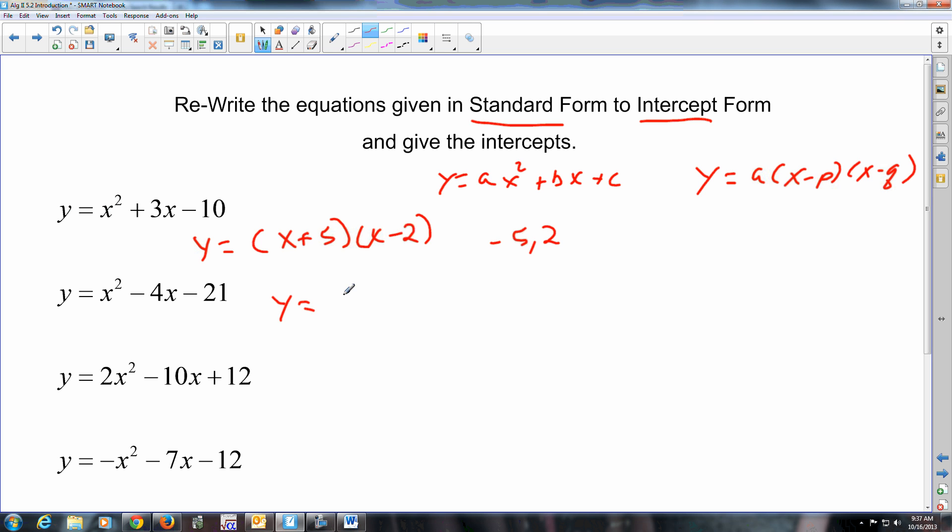Rewriting this one in intercept form, you're just factoring it. So x, x, negative 21, negative 4. So minus 7 plus 3. The x-intercepts, read them both opposite, 7 and negative 3. Because the intercepts here would be p and q. We did this back in section 5.1. This one, there's a 2 in common. Factor the 2 out. That's a lot easier to see. This would become y equals 2 times x minus 3 times x minus 2. So your intercepts are 2 and 3. They come from these numbers, not this one out here.